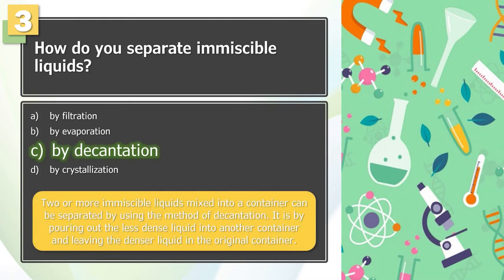The answer is C. Two or more immiscible liquids mixed into a container can be separated by using the method of decantation. It is by pouring out the less dense liquid into another container and leaving the denser liquid in the original container.